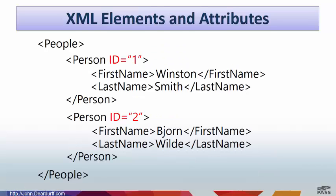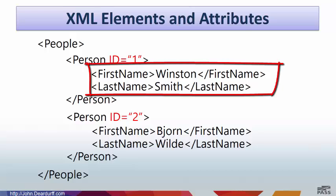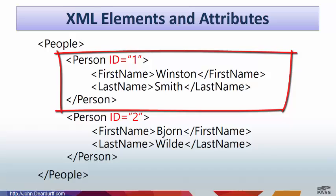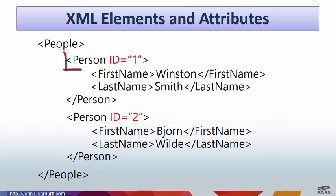When you are formatting your XML, you can nest elements within each other. Here you can see we have both the first name and last name elements nested within the person element. Also, notice the ID field — this is an attribute. Attributes are used to provide additional information about an element. In this case, what is the ID of the person?